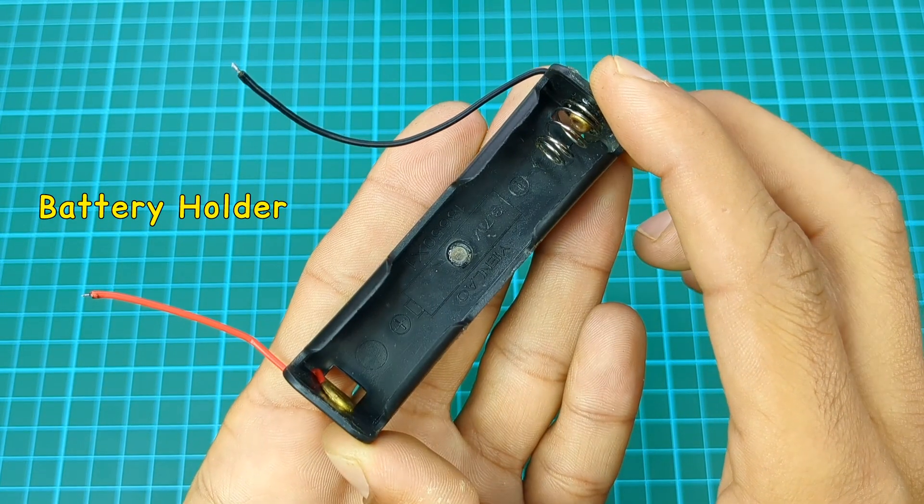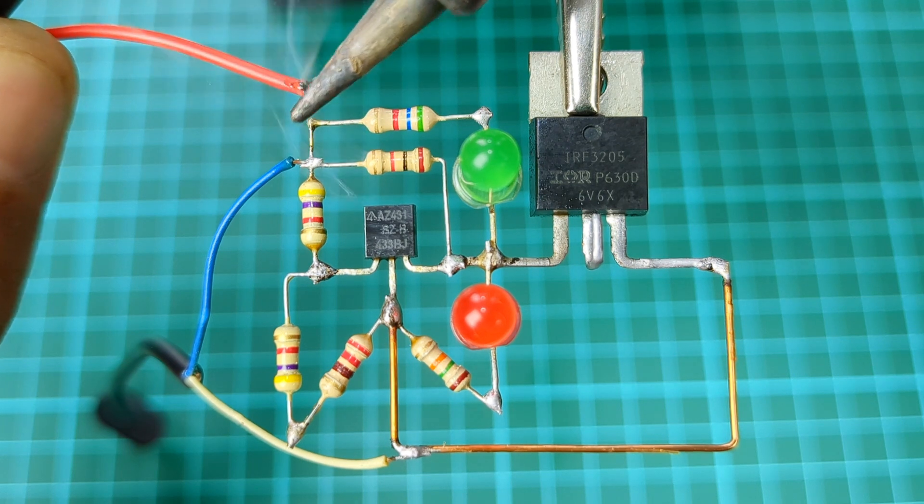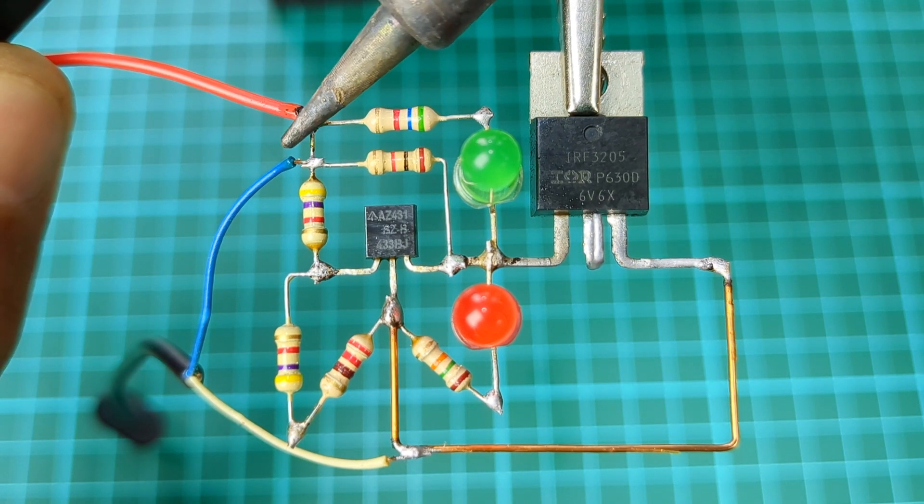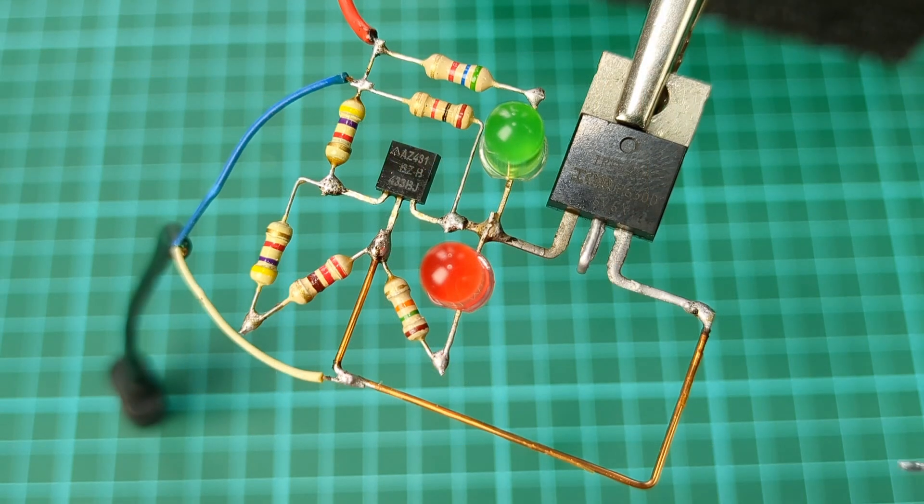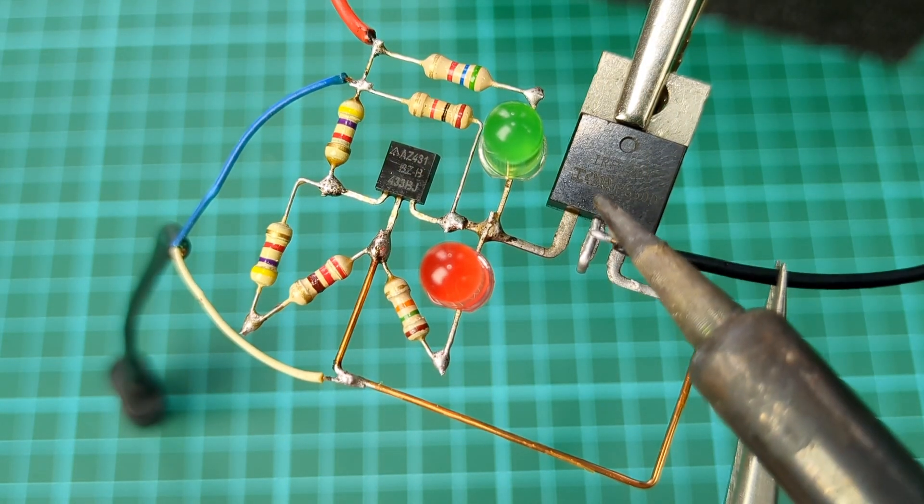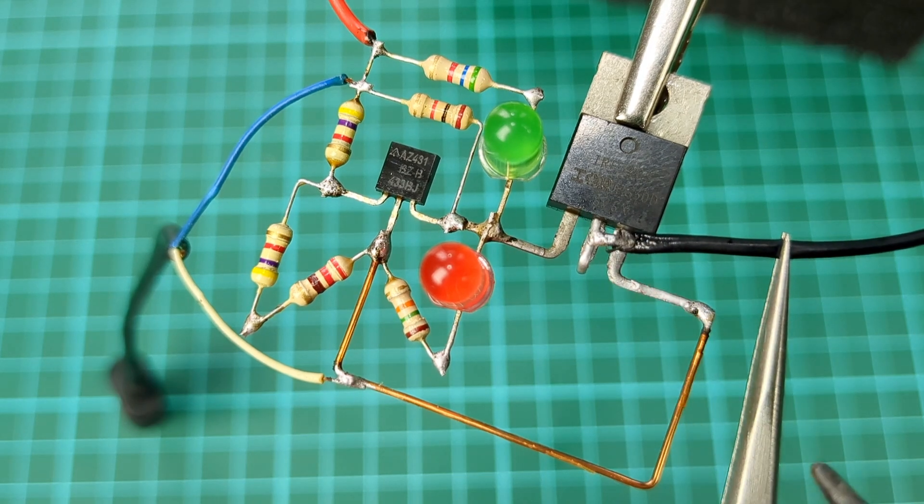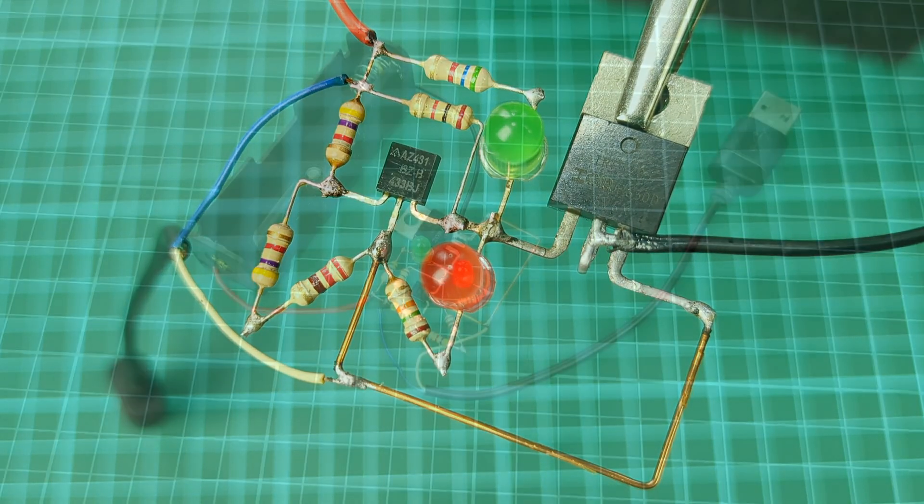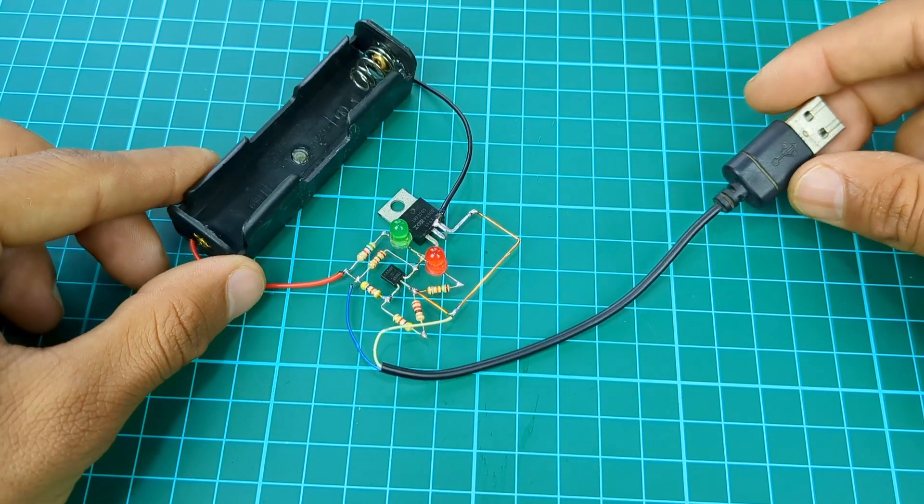Now take a battery holder and do positive and negative connections like this. All connections are completed and here is the circuit diagram.